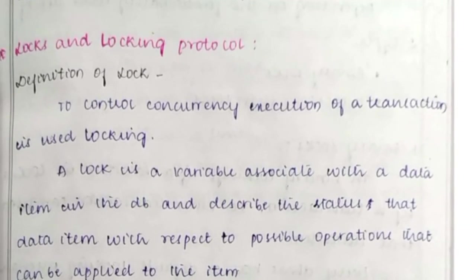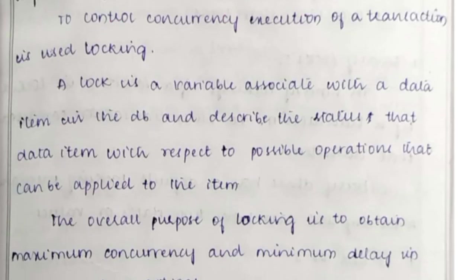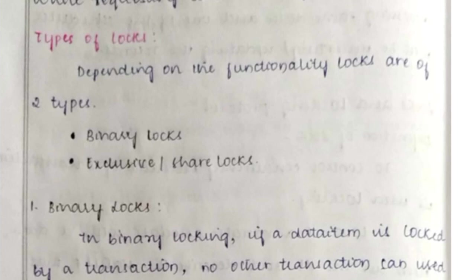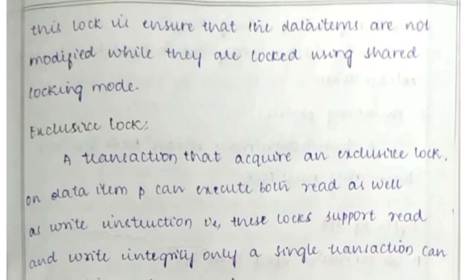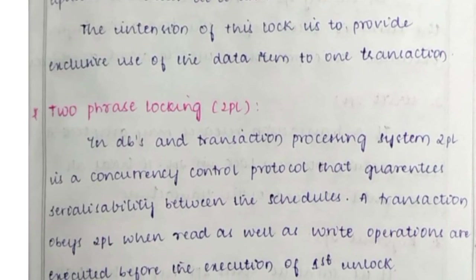There are two types of locks: binary locks and exclusive/shared locks. Binary locking means that if a data item is locked by a transaction, no other transaction can use that data item. In binary locking the states are either locked (1) or unlocked (0).